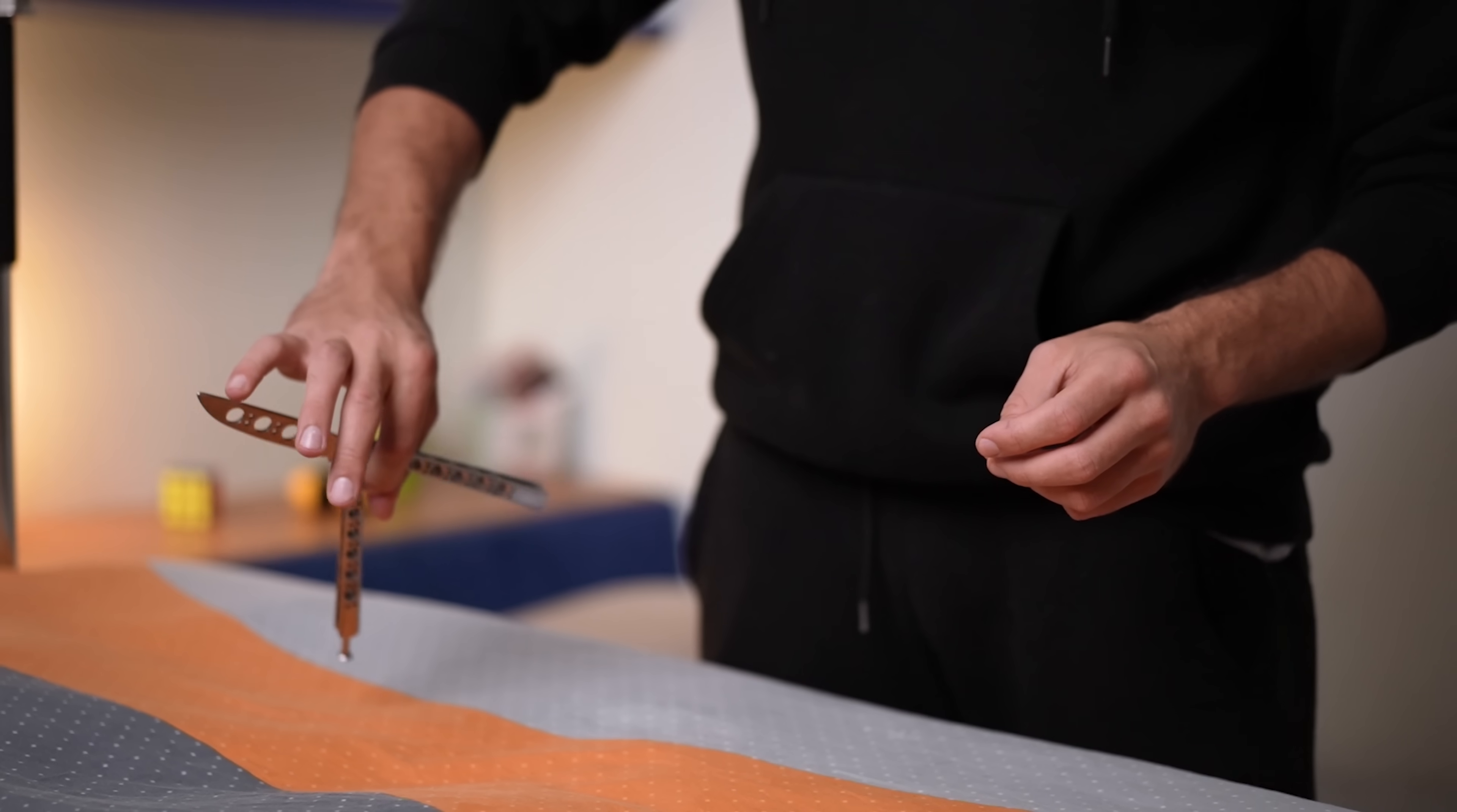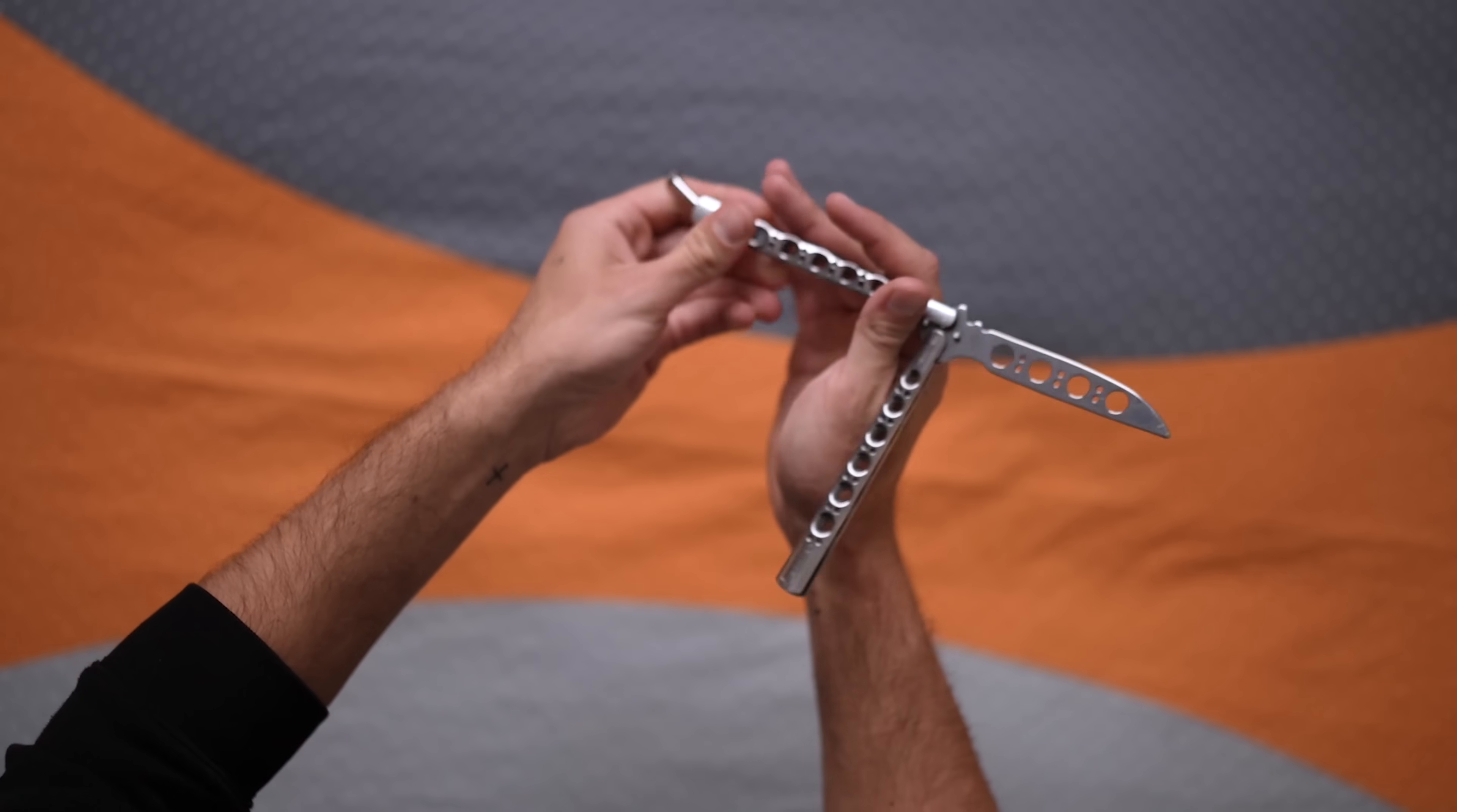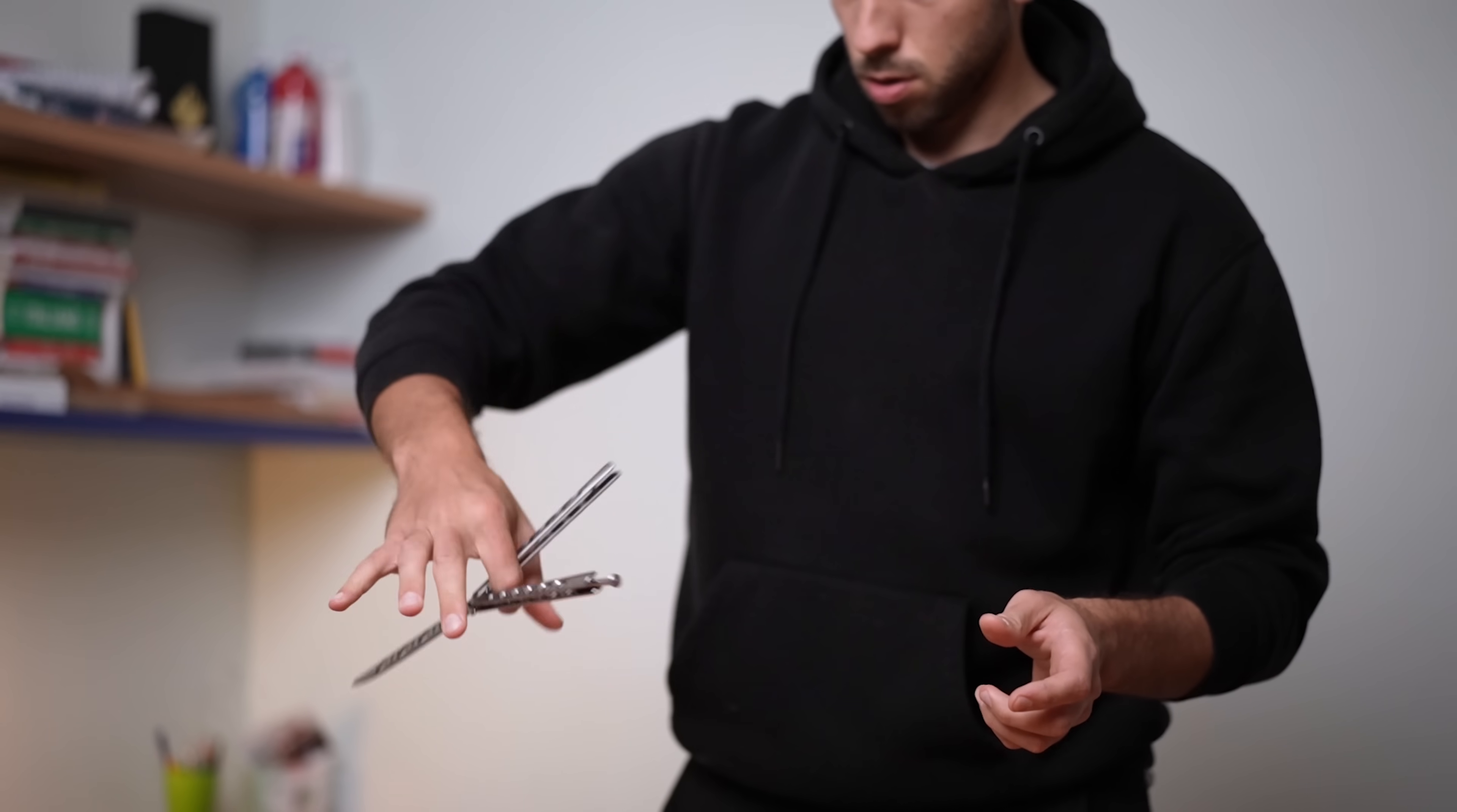Then we bring the hand upside down once again, performing a zen rollover and the trick is done. Well, it's complicated. But practice is the only way to make complicated things become easy.